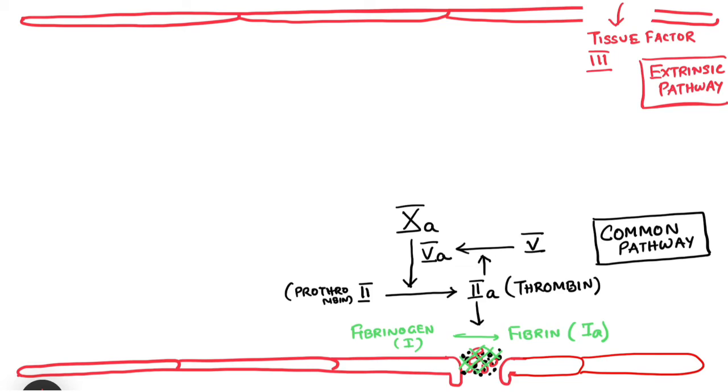This factor 3 generally remains within the tissues outside of blood vessel. Whenever blood vessel gets damaged and blood comes in contact with the external tissue, then this factor 3 gets activated. This activated factor 3 along with factor 7 which is activated by vitamin K together go and activate factor 10. This is known as the extrinsic pathway.